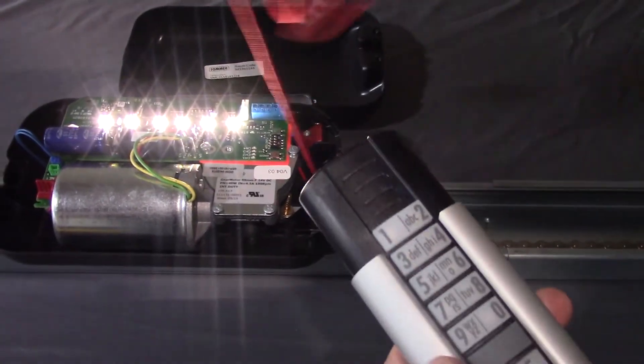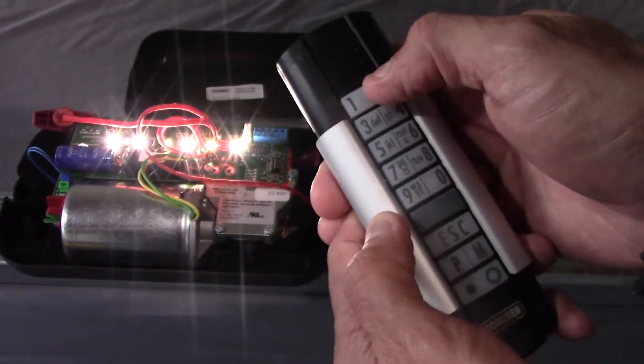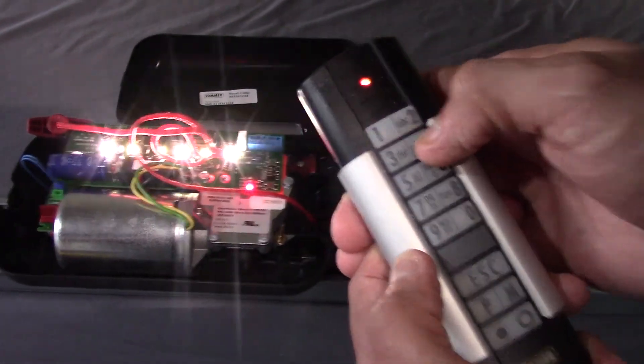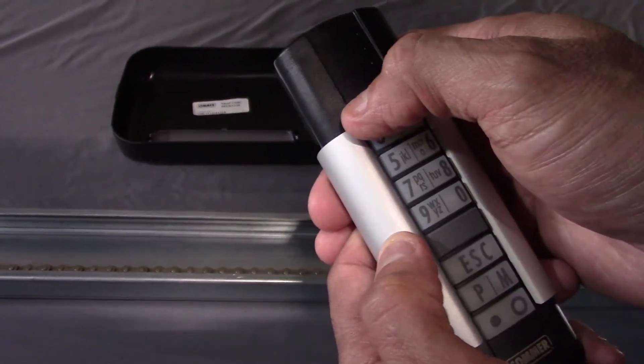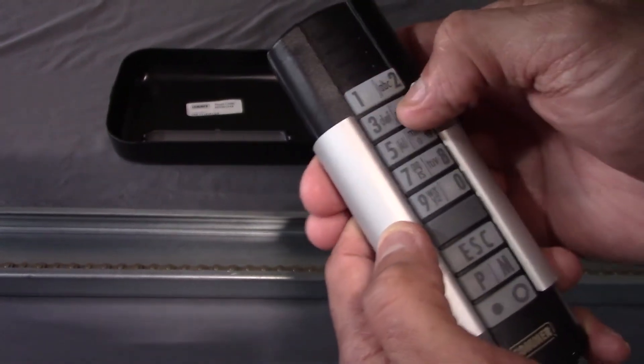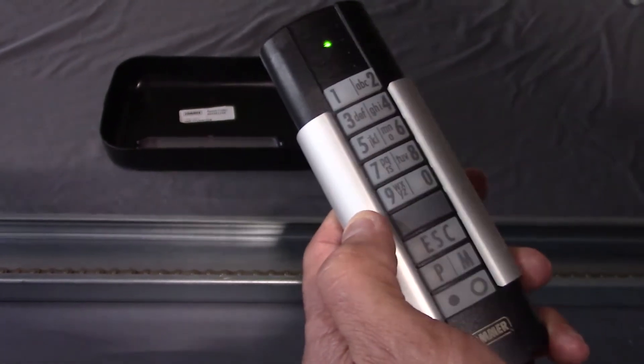I'm going to press the code right now: 1234. You'll see the opener activate. If you want to stop it, press the code again, and that stops the carriage.